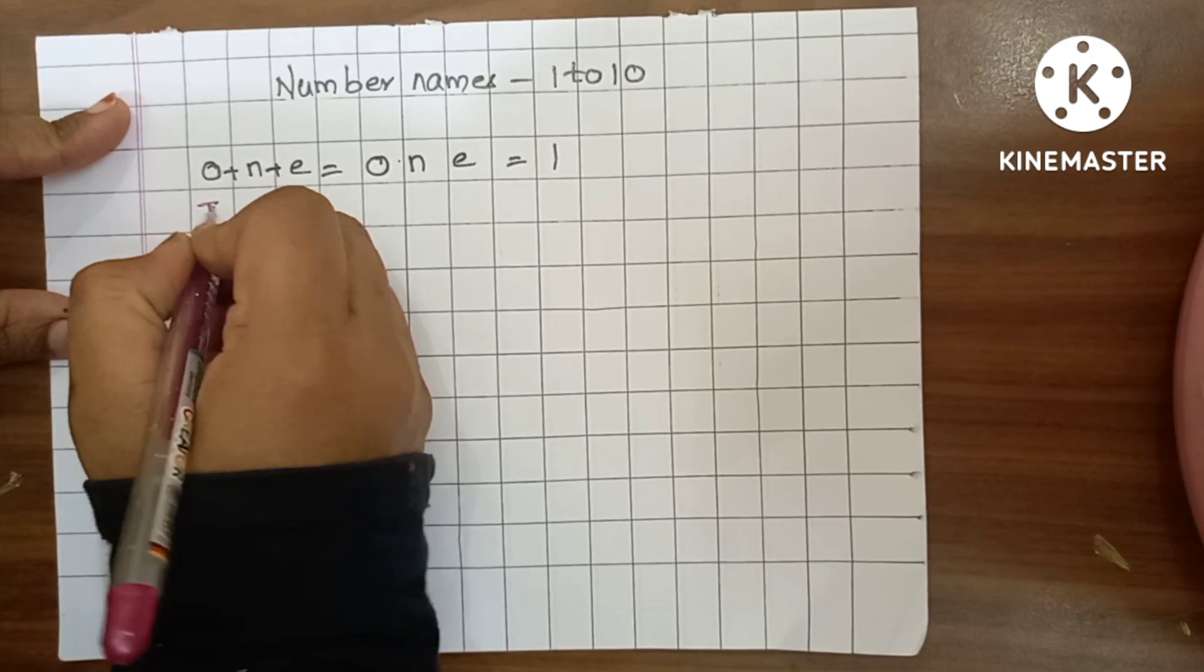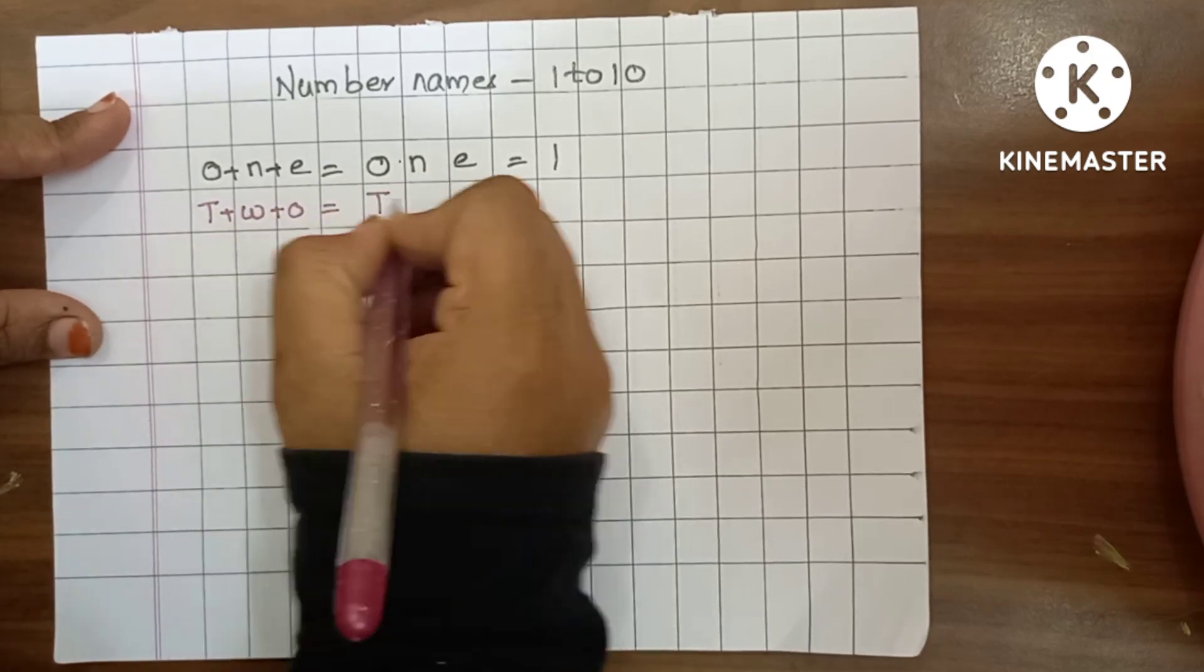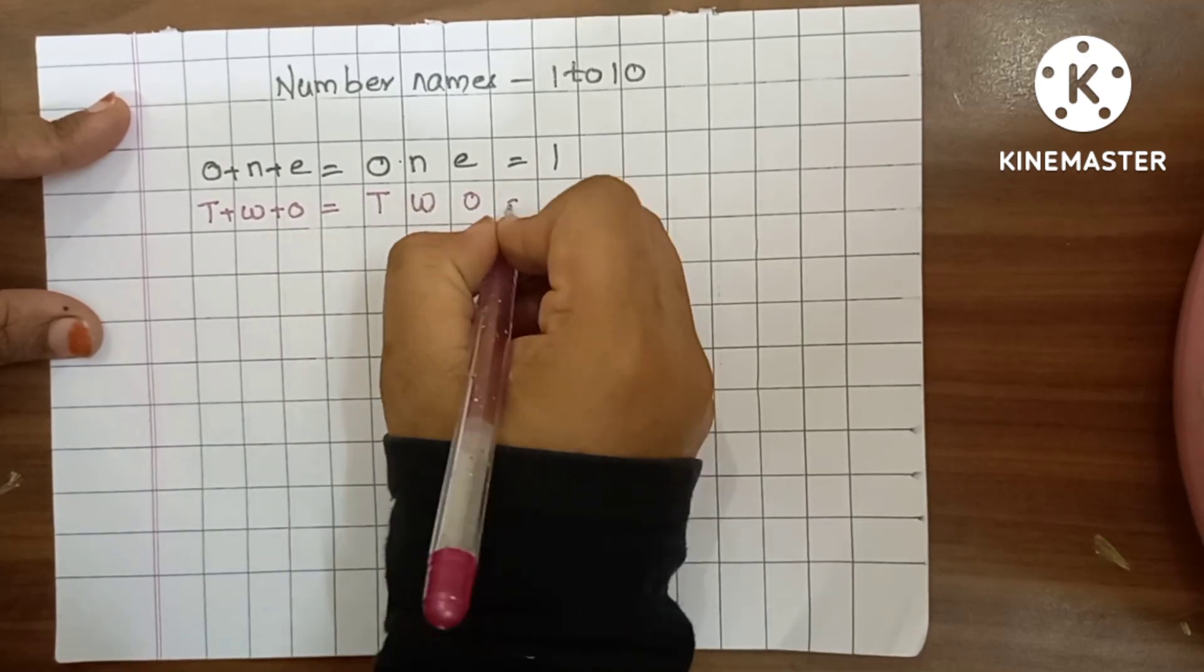2. T plus W plus O is equals to 2. T, W, O, 2.